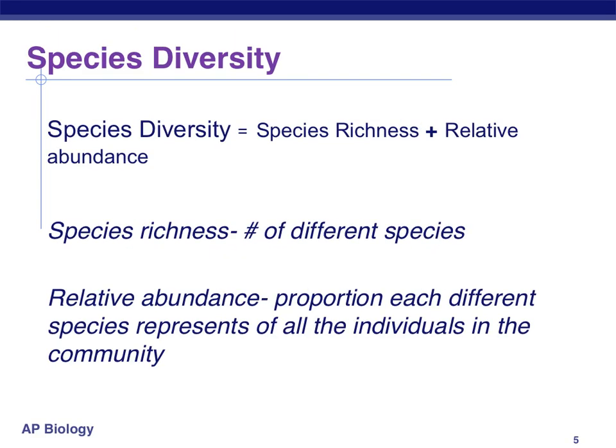When we think of species diversity, we're literally looking at species richness plus the relative abundance of those individual organisms. Species richness refers to the number of different species present. Relative abundance describes the proportion of each species represented by all individuals within the community — normally well displayed on a pie chart. Ecologists use indices to quantify species diversity and give it an actual number; it's a mathematical measurement, though not something we focus heavily on in AP Biology.